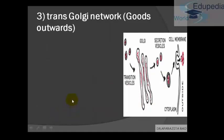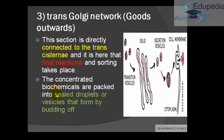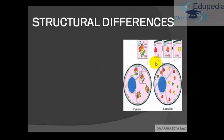The last part, the exit gate, is the Trans-Golgi network. This is where the final reactions take place. Here, sealed droplets or vesicles are formed by budding off. As you can see in the diagram, vesicles are formed by budding off from the Golgi.